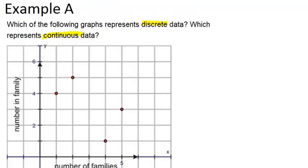So if we look at our first graph here, we can see we just have individual points. So that means this graph is discrete data.